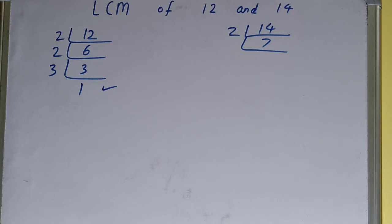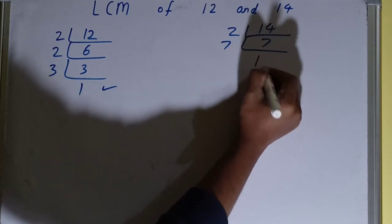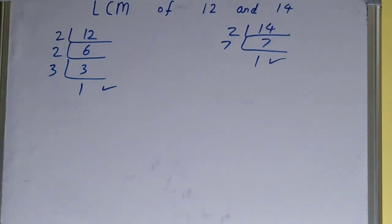7 is a prime number, so prime numbers are only divisible by themselves. So 7 is only divisible by itself. When you do so, you will be getting 1. Once you get 1, you need to stop.